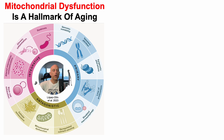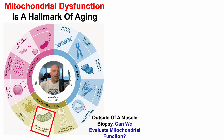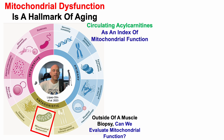Mitochondrial dysfunction is a hallmark of aging, and we can see that mitochondrial dysfunction is included as one of the 12 hallmarks. With that in mind, outside of a muscle biopsy, can we evaluate mitochondrial function? So in today's video, we'll see that circulating levels of acylcarnitines can be used as an index of mitochondrial function.